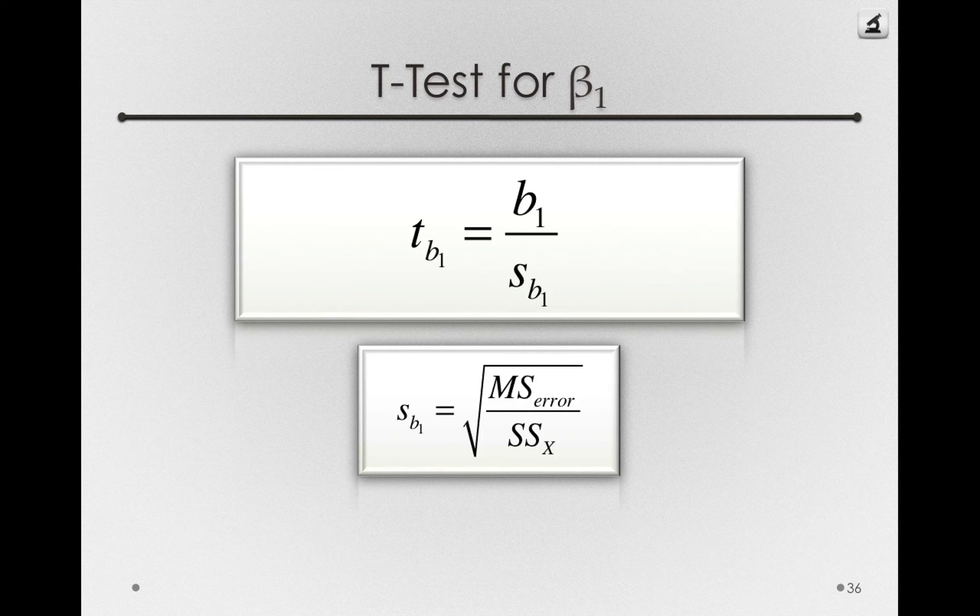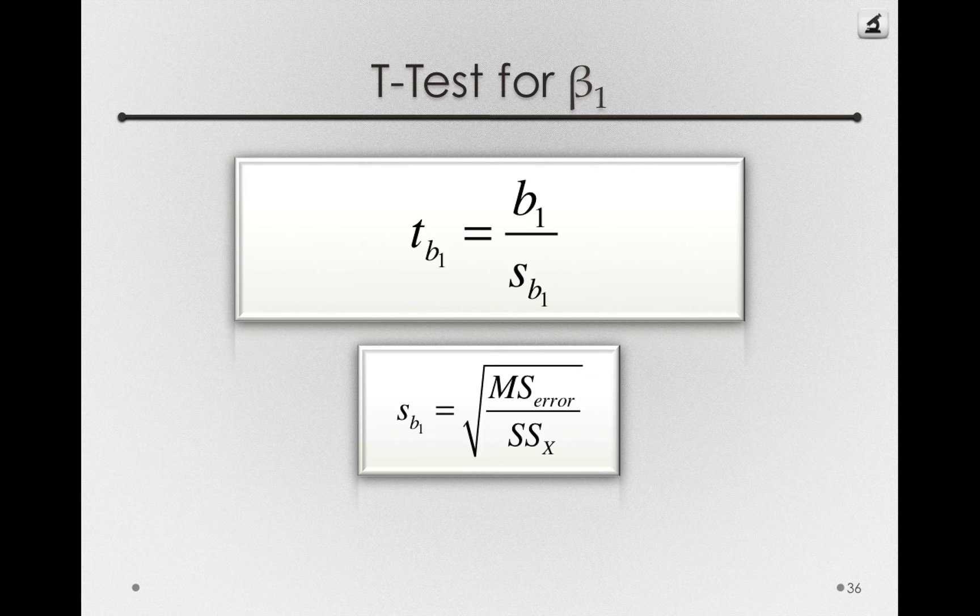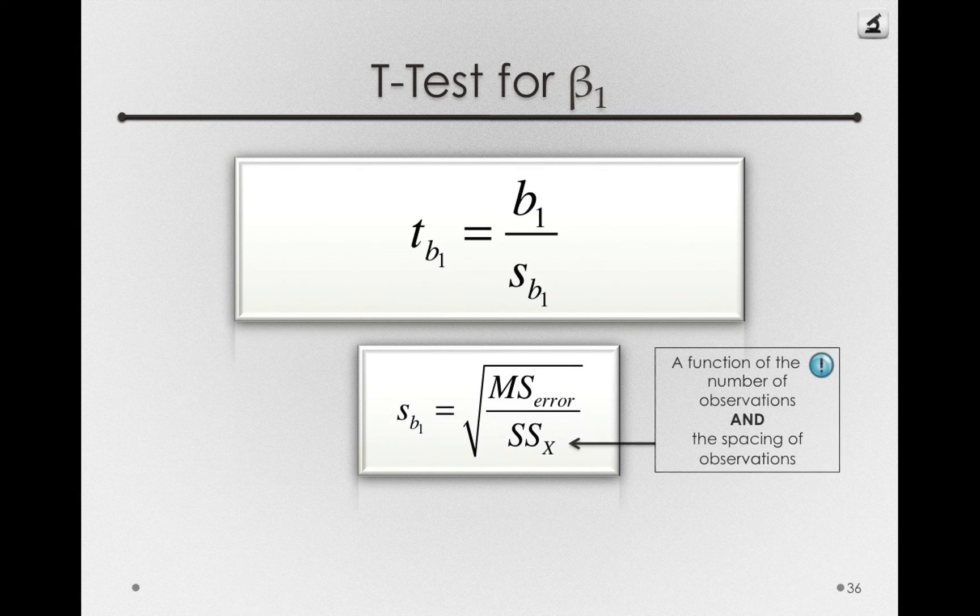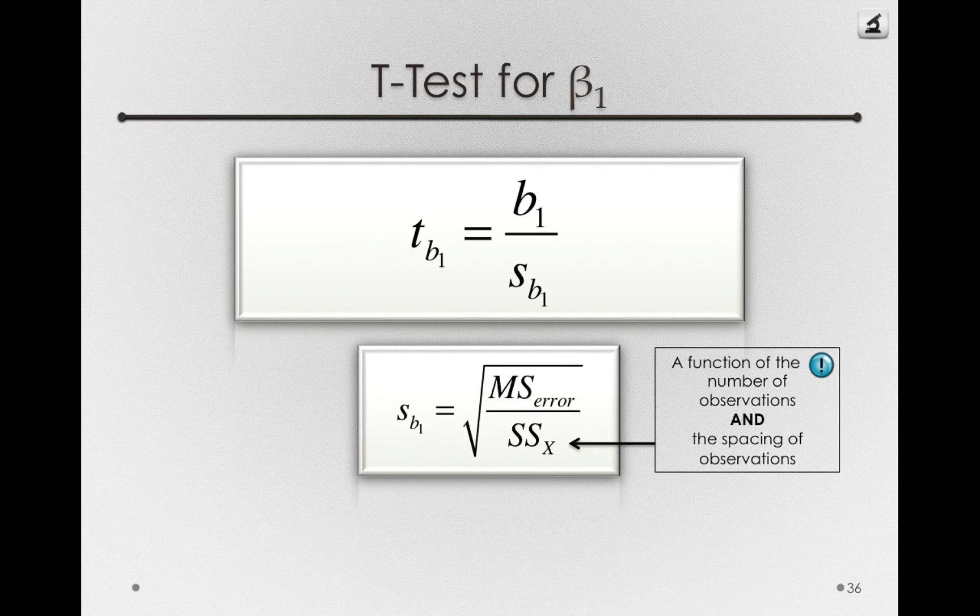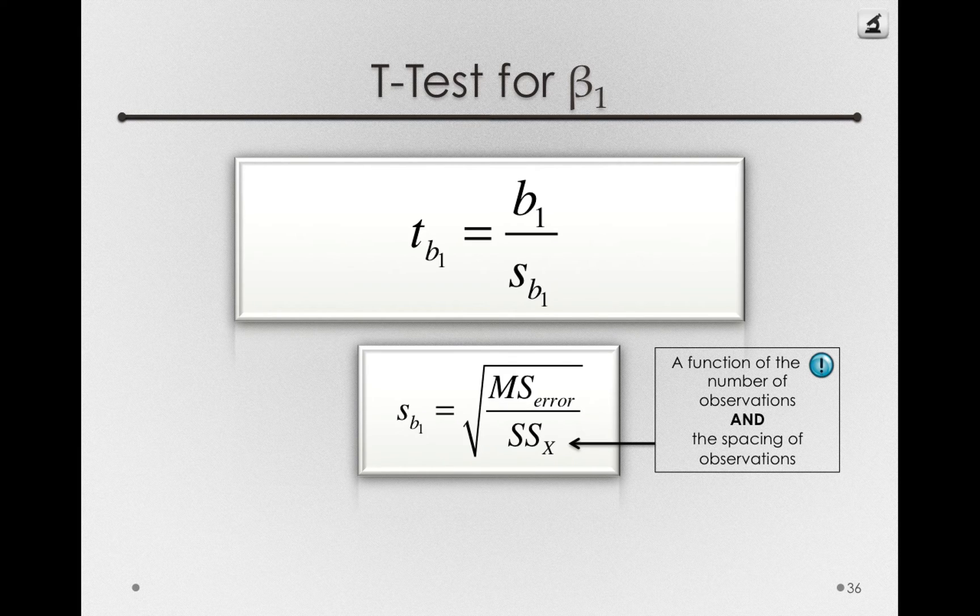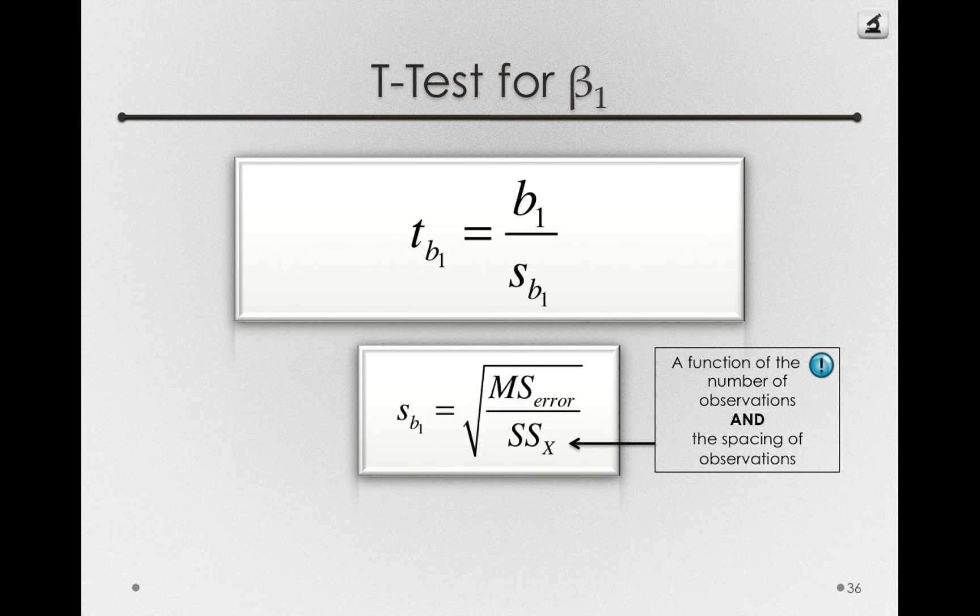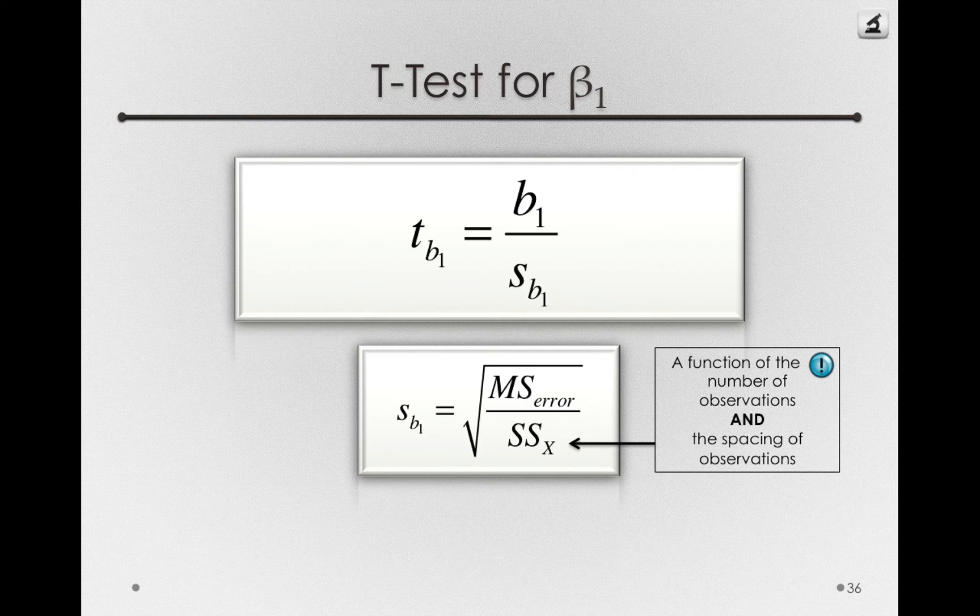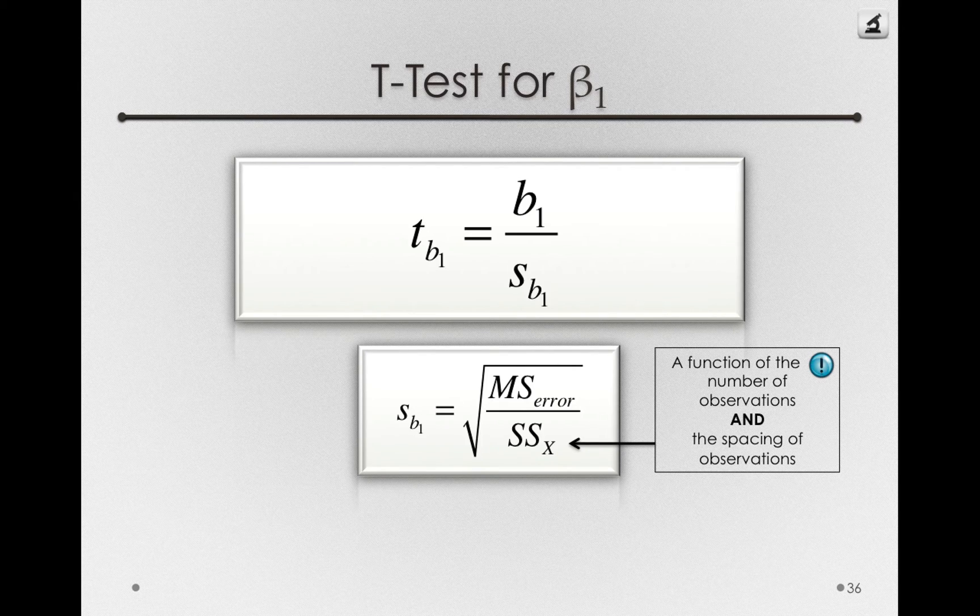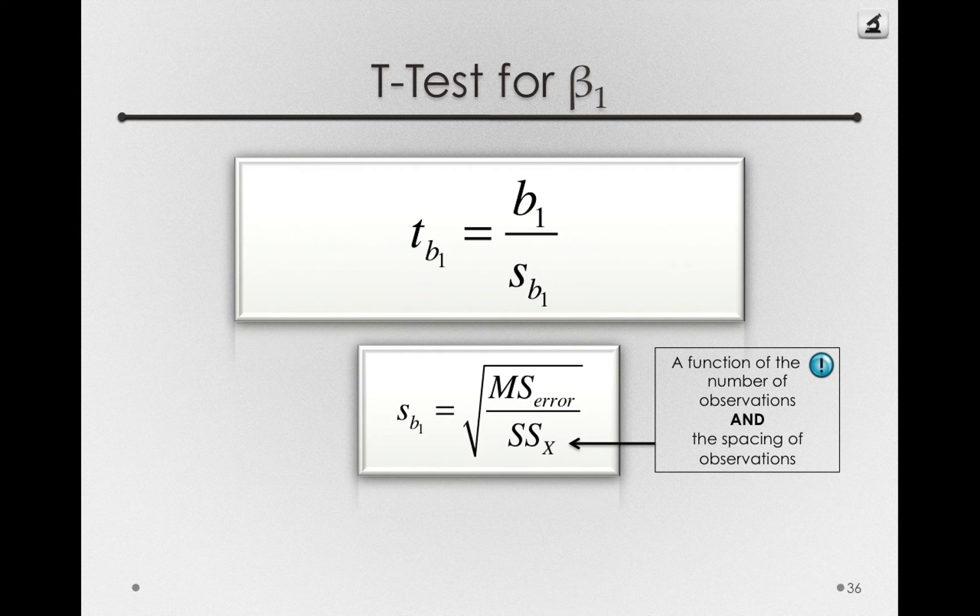But it's also sensitive to something else, and that is the spacing of the x variable. So this denominator is a function of the number of observations, but also the spacing of the observations in x. Specifically, how spaced out we have our observations in the x-axis.